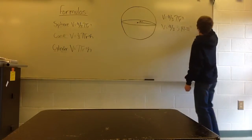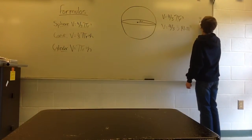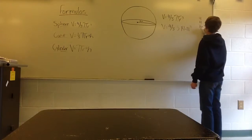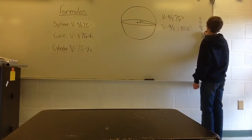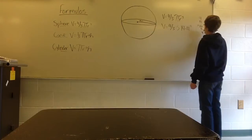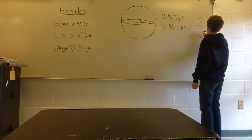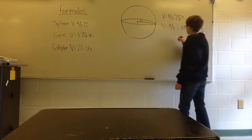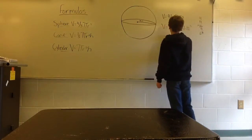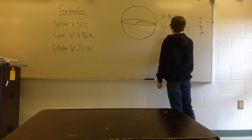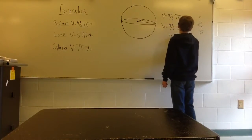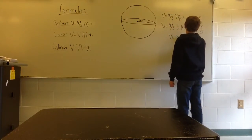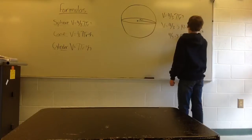So 4 times 4 gives you 16, times 4 again gives you 64. So you now have 4 thirds times 3.14 times 64.